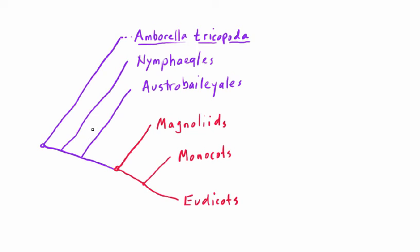So if we want to refer to these basal angiosperms as a group, we have to identify them as a grade rather than a clade. It's useful to talk about these basal grades like the ANA plants because they tend to have characteristics that are primitive compared to the more derived taxa further out in the tree. We look at them to understand the starting point for the evolution of characters we find in the mesangiosperms.